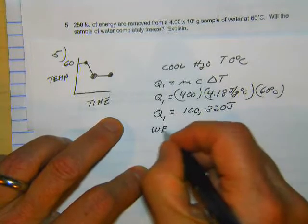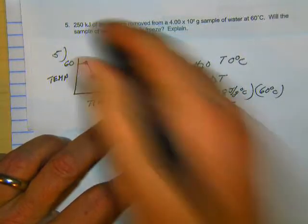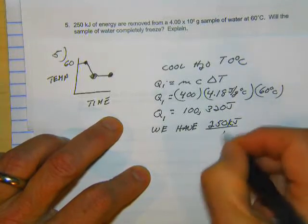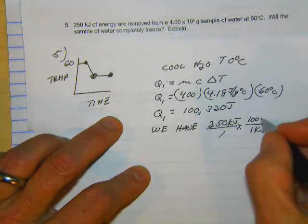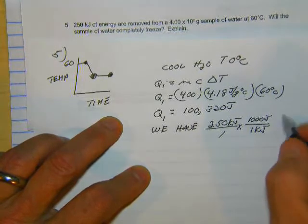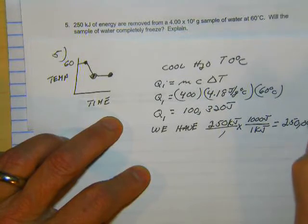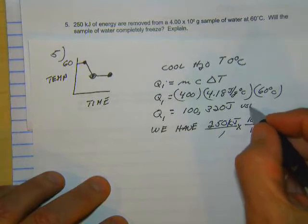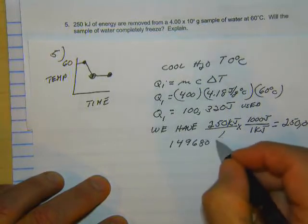So we have 250,000. And again, 250 kilojoules over 1 times 1 kilojoule over 1,000 joules. And that's going to equal 250,000 joules. So this is what we have. This is what we used. So we have 149,680 joules left.